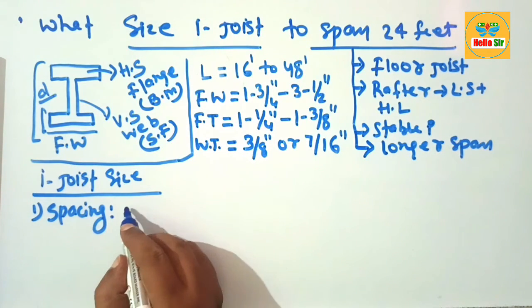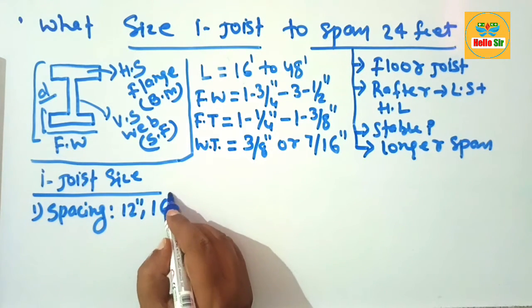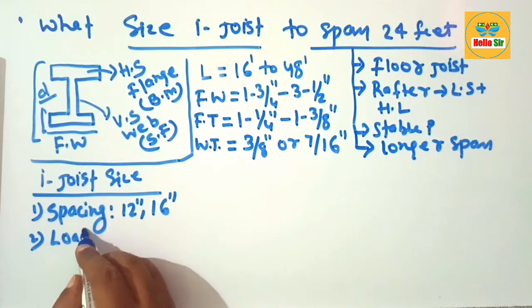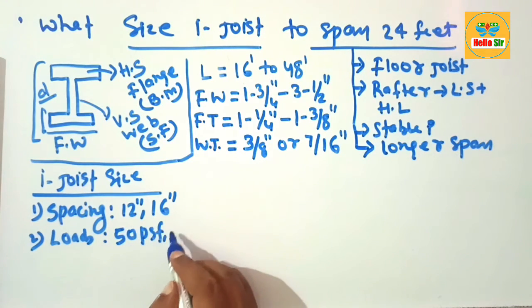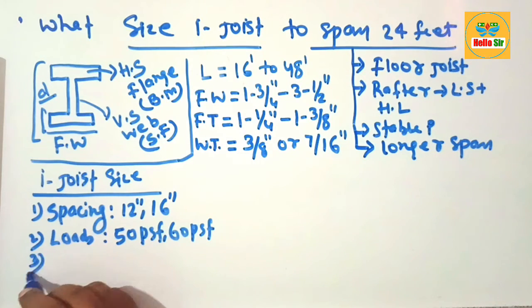The second factor is load condition, consisting of dead load and live load, that may be 50 pounds per square foot or 60 pounds per square foot. The third major factor is the building code in your area.